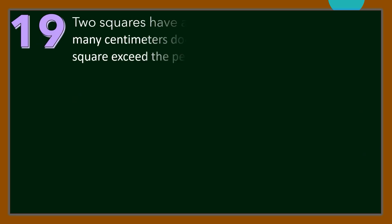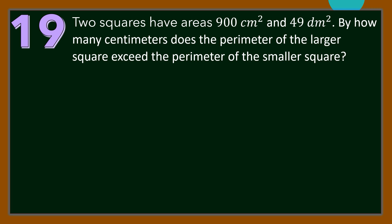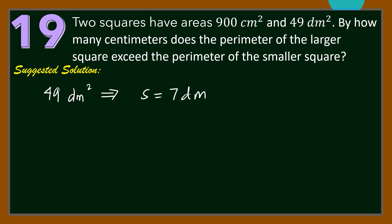Number 19. Two squares have areas of 900 squared centimeters and 49 squared decimeters. By how many centimeters does the perimeter of the larger square exceed the perimeter of the smaller square? For the square with area 49 squared decimeters, each side equals 7 decimeters, which is 70 centimeters. So the perimeter is 4 times 70 centimeters, that is 280 centimeters.